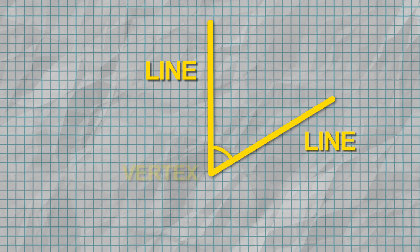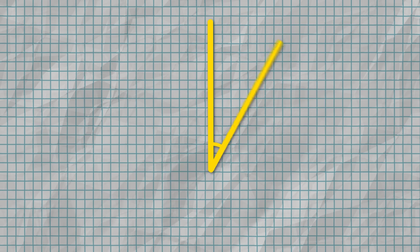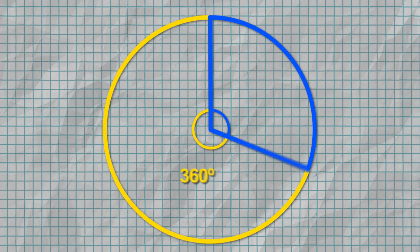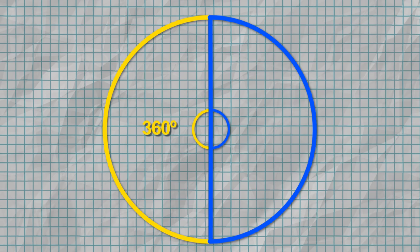Circles actually play an important role in understanding another math concept: angles. An angle is the turn or space that is formed when two rays or lines meet at an end point, also known as a vertex. Angles are measured in degrees. If you were to make a full rotation from the center point of a circle, the arc or the turn will always measure 360 degrees. Doing a half rotation creates a straight line, with an arc that measures 180 degrees, or half of 360.